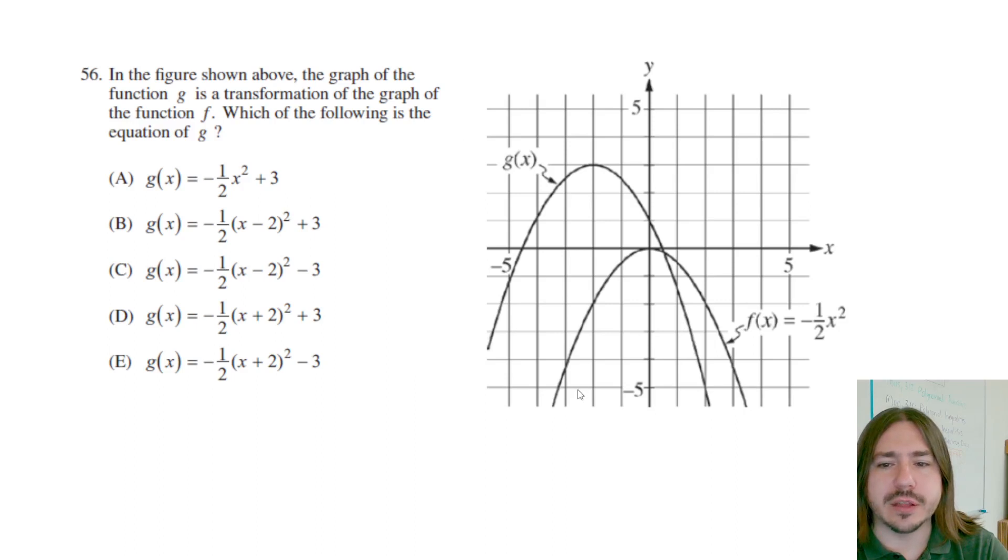So we don't actually need to know exactly what the function's equation is, even though they do give us F. To find the function for G, we're going to take this function and apply the transformations that we need to get from this parabola to this one over here in the top left corner.